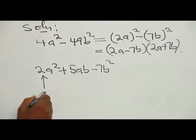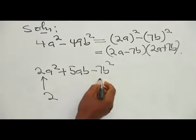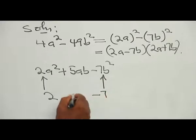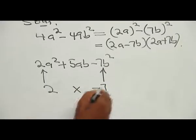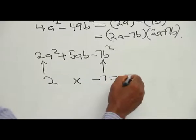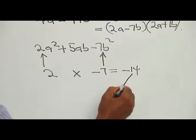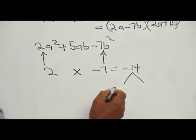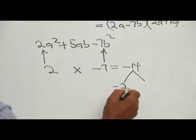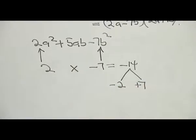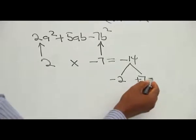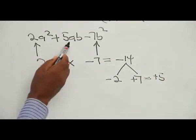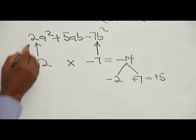For quadratic factorization, we take the coefficient of A squared, which is 2, and multiply by the coefficient of B squared, which is minus 7, giving minus 14. We then find two factors of minus 14 that add to give plus 5. Those factors are minus 2 and plus 7, since minus 2 plus 7 equals plus 5.